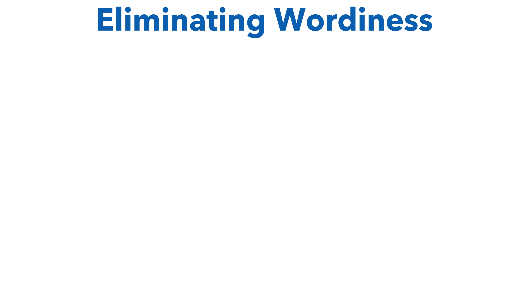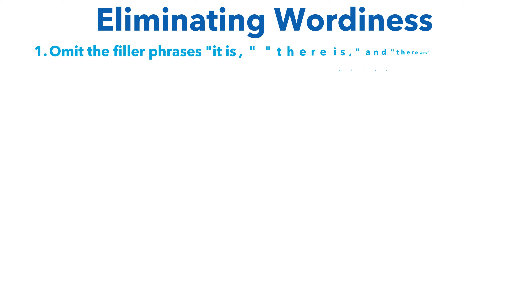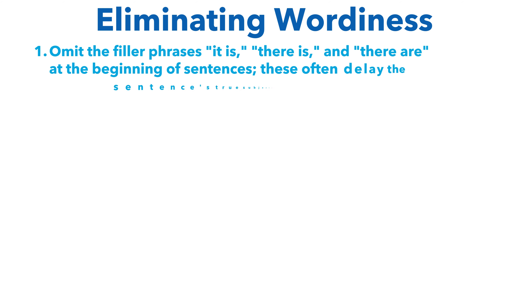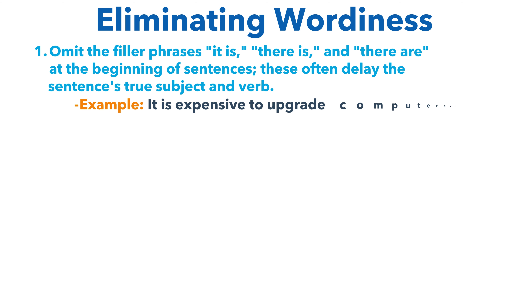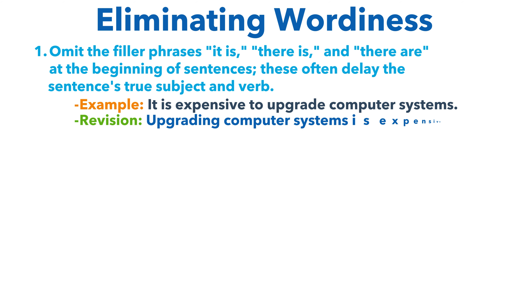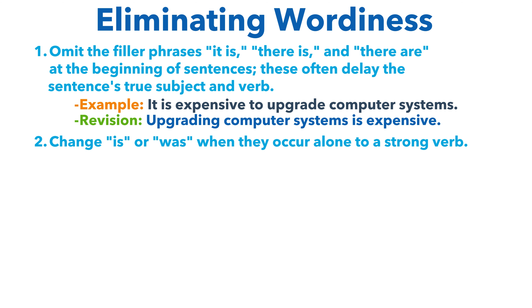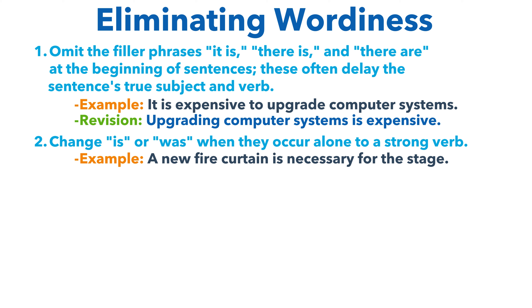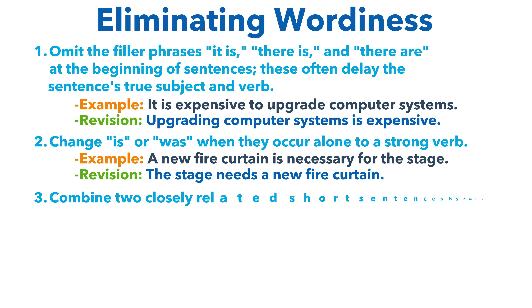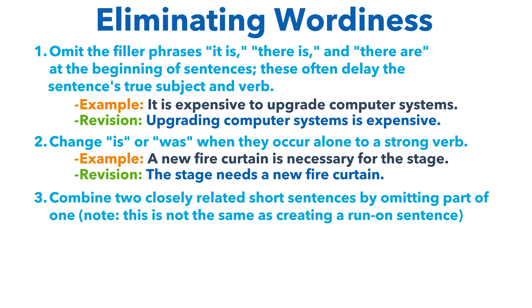Eliminating wordiness. There are several ways to eliminate wordiness. One way is to omit filler phrases like 'it is,' 'there is,' and 'there are' at the beginning of sentences, since they delay the true subject and verb. For example, instead of 'It is expensive to upgrade computer systems,' write 'Upgrading computer systems is expensive.' A second way is to replace a weak 'is' or 'was' with a strong verb. Instead of 'A new fire curtain is necessary for the stage,' write 'The stage needs a new fire curtain' — 'needs' is a stronger verb.